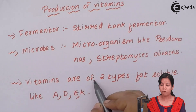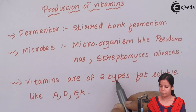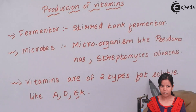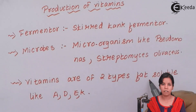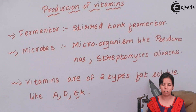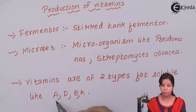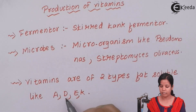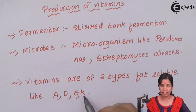Vitamins are of two types: fat-soluble and water-soluble. Fat-soluble vitamins, when eaten, get stored in the body and are not released continuously — your body stores them. Examples of fat-soluble vitamins are vitamin A, D, E, and K.